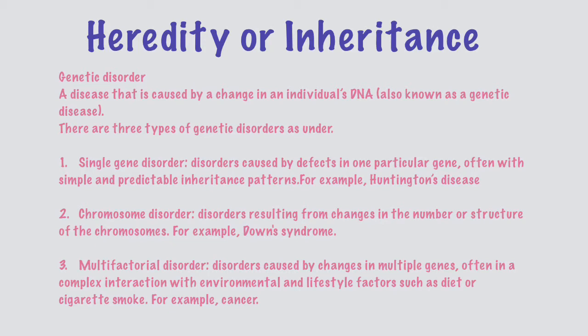Multifactorial disorders are those genetic disorders caused by changes in multiple genes. Examples include: single gene disorder — Huntington's disease; chromosomal disorder — Down syndrome; and multifactorial disorder — cancer. In our following lectures, we are going to study Huntington's disease and Down syndrome in detail. Huntington's disease is caused by an abnormality in a single gene, and Down syndrome is caused by an abnormal number of chromosomes.